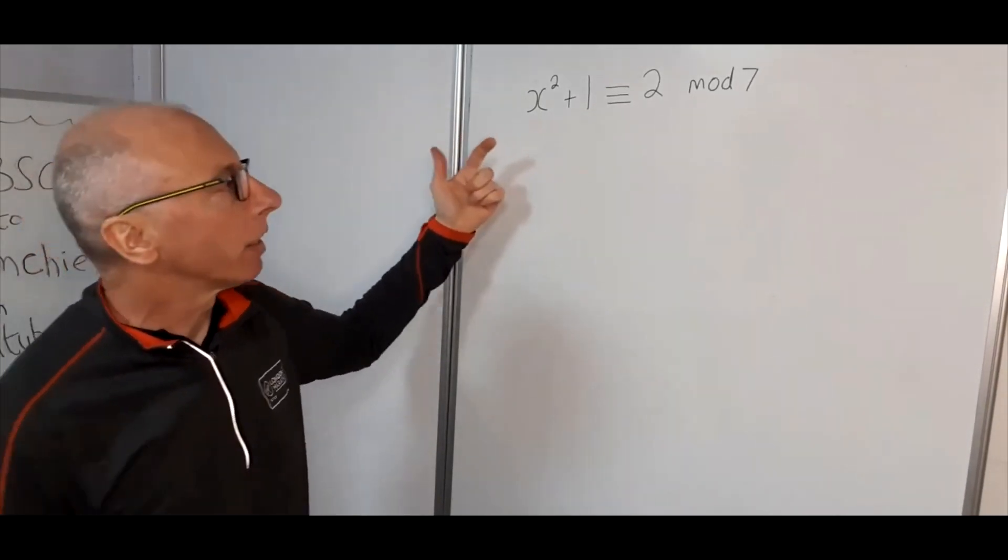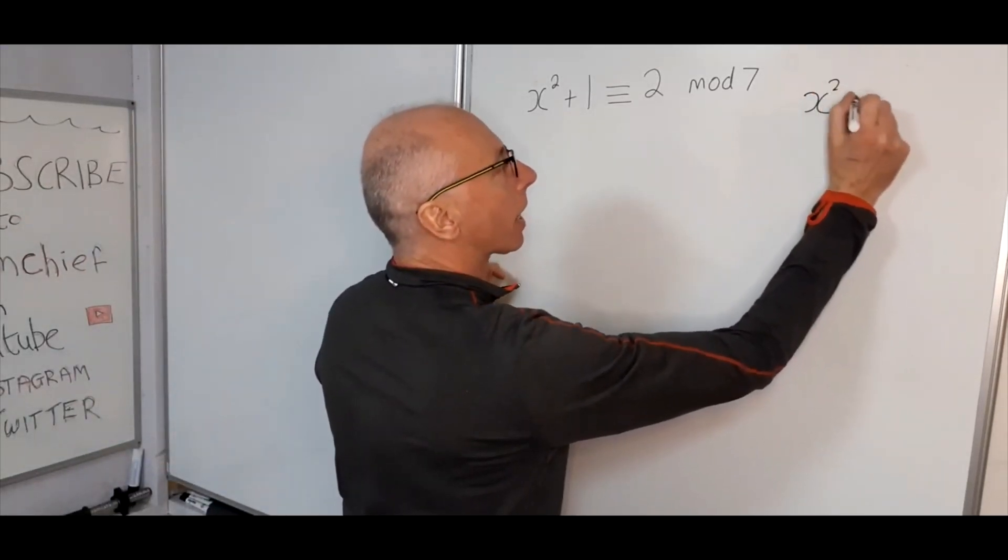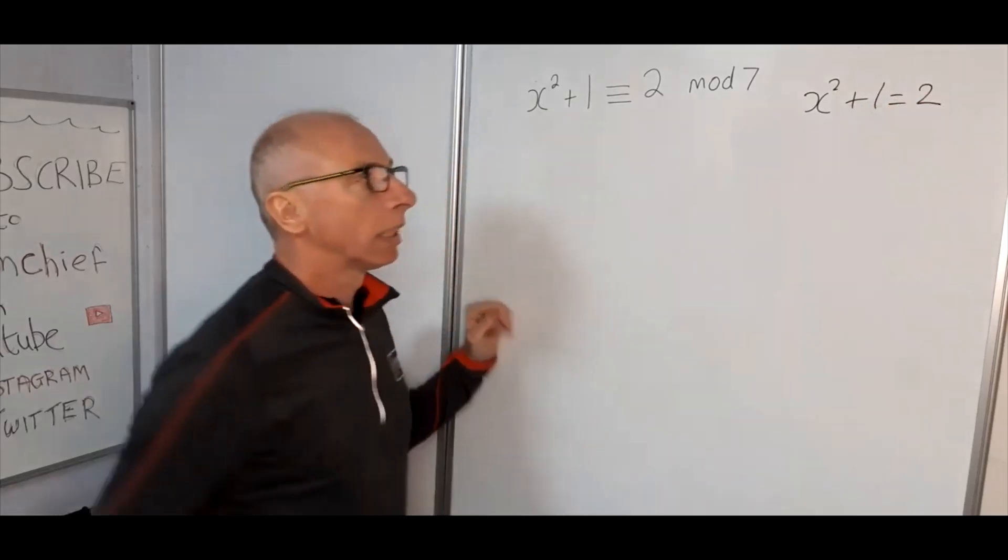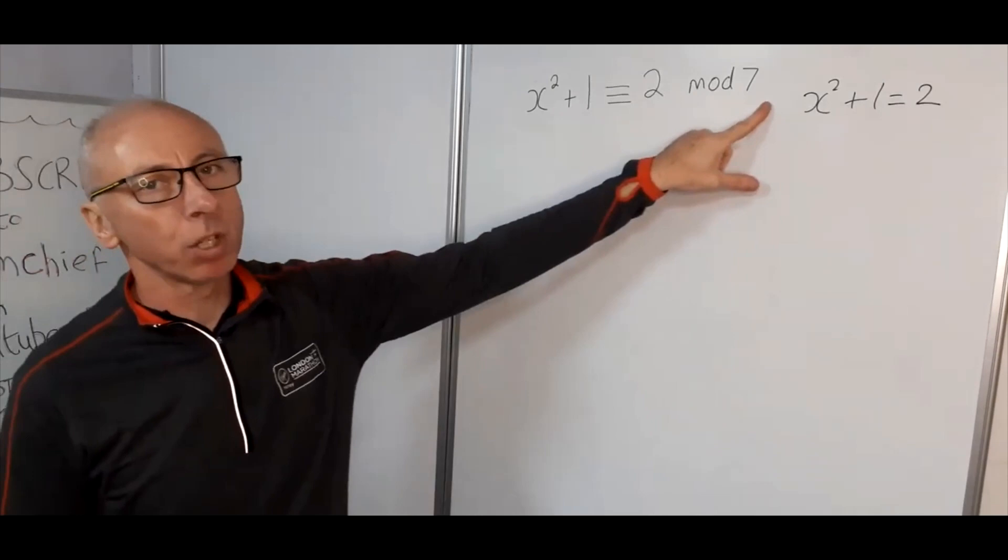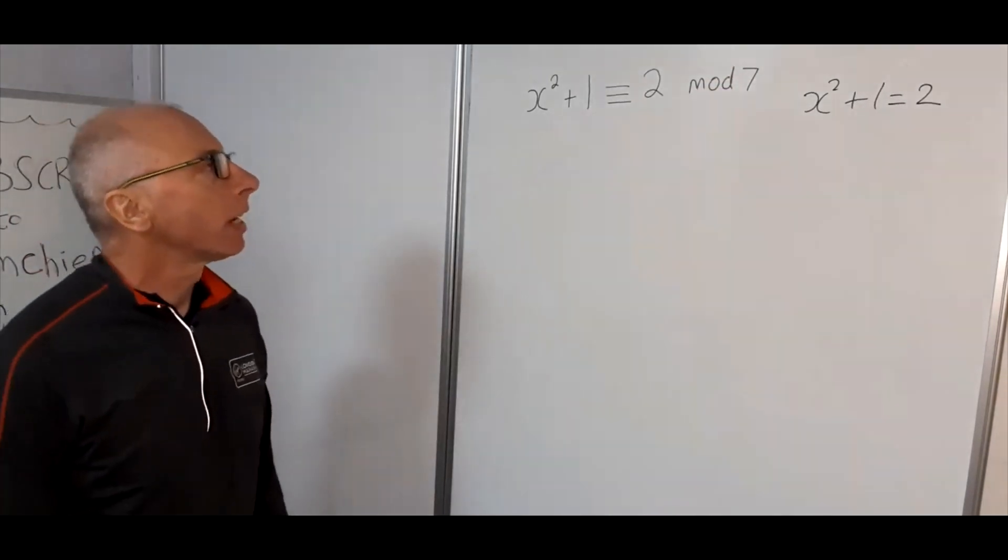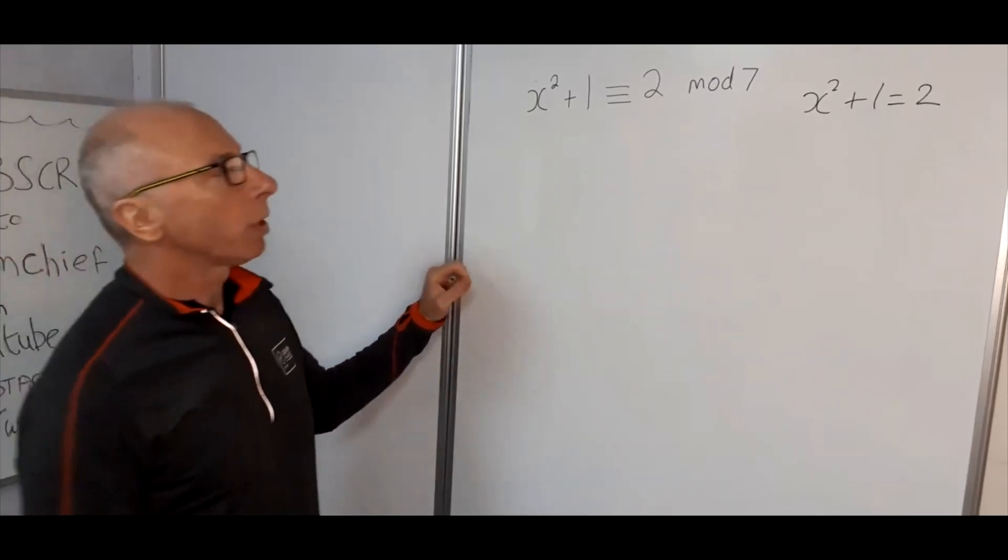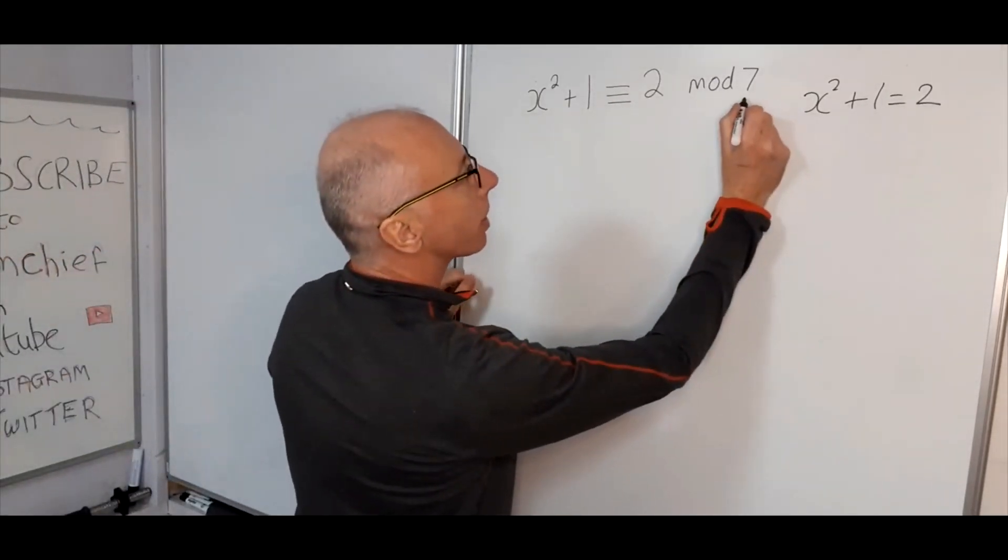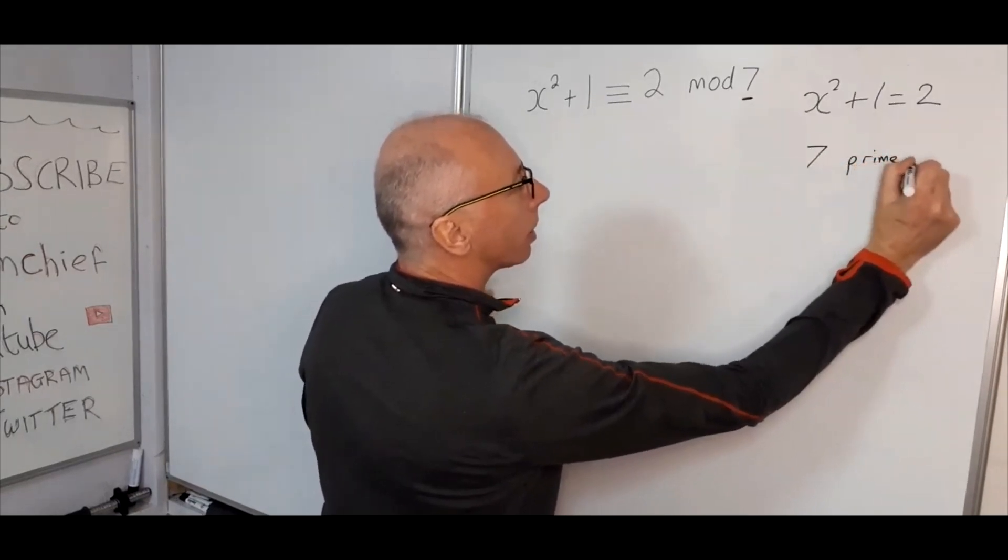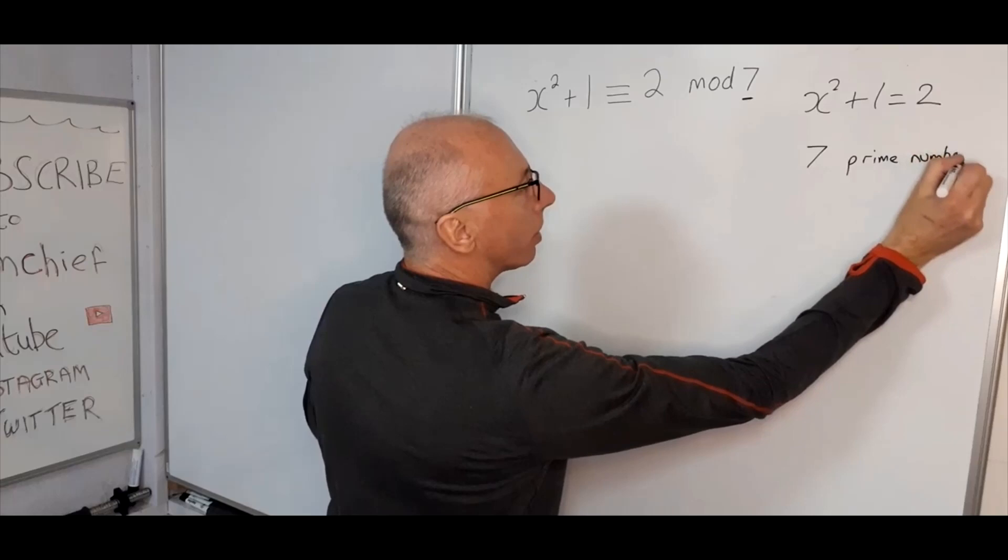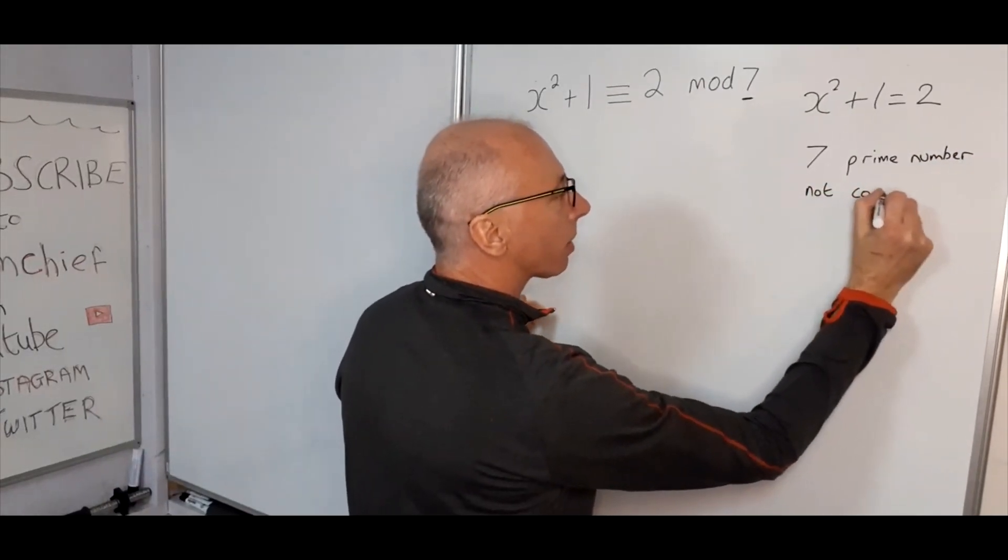Now it looks a little bit like the old-fashioned quadratic questions we used to see, x squared plus 1 equals 2, and then we try and solve for x. But here we're trying to solve for modulus 7. Now where are we going to start with this? Well, first of all, the good news is that we can see 7 is a prime number, so basically it's not composite, and that's an important place to start.